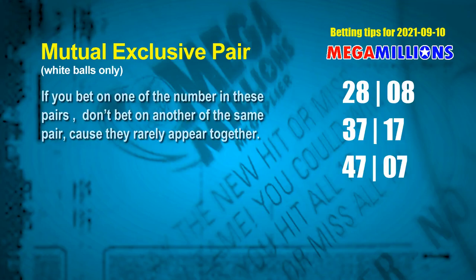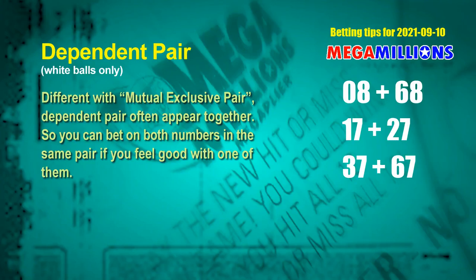First pair: 28 and 08. Second pair: 37 and 17. Third pair: 47 and 07. Some numbers are mutual exclusive; others are dependent. In dependent pairs you can bet on both, because they often appear together in winning numbers. The white ball dependent pairs for the next draw are: first pair 08 and 68, second pair 17 and 27, third pair 37 and 67.